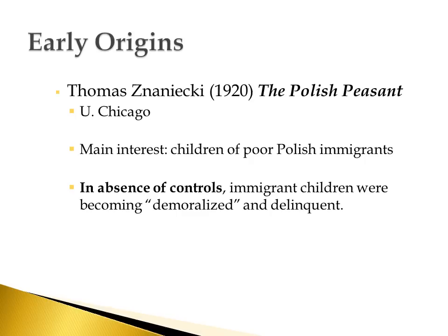There weren't really good schools around, and there weren't a lot of normal activities for these children to become invested in. Basically what Znaniecki described in the book was that in the absence of any kind of controls, these immigrant children were becoming what he called demoralized and delinquent. This really set off a movement of interest in understanding what happens to children and adolescents who don't experience normal controlling forces in their lives. People started to explain delinquent problem behavior as being due to this absence of control, and he was kind of the first person to write about this in any formal way — not quite a theory yet, but definitely with the underpinnings for ideas that would be used in the next few decades.